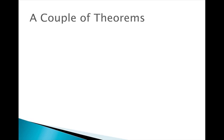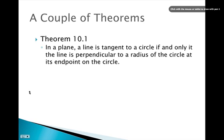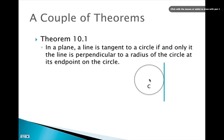Now let's move on to a couple of theorems. Theorem 10.1 states: in a plane, a line is tangent to a circle if and only if that line is perpendicular to a radius of the circle at its endpoint on the circle. So if we have circle C and a tangent line, drawing the radius from C to the point of tangency, it will always be perpendicular to the tangent line — no matter what. This radius will always, always be perpendicular to the tangent line at that point.